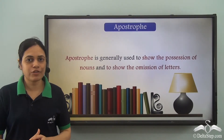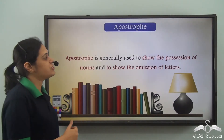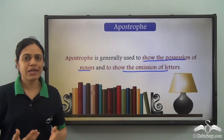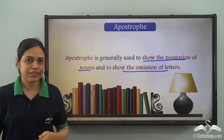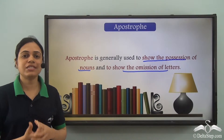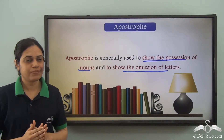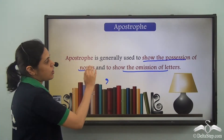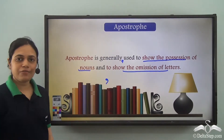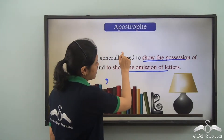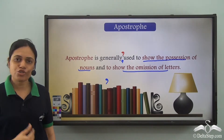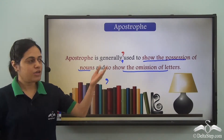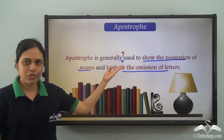We have learned about the important punctuation mark called apostrophe. Apostrophe is generally used to show the possession of nouns and to show the omission of letters, making a sentence shorter. It looks similar to a comma, but a comma is placed after a word at the bottom, whereas an apostrophe is placed after a word at the top. If it is at the top, it is an apostrophe; if it is at the bottom, it is a comma.